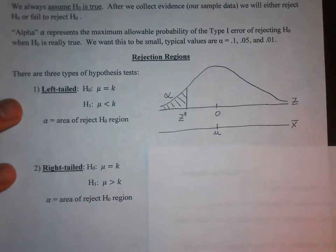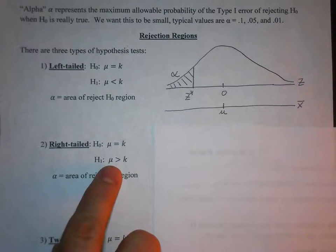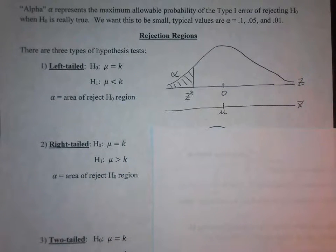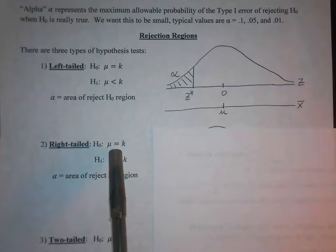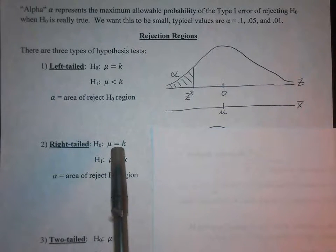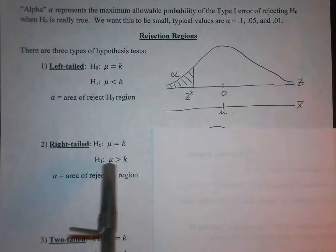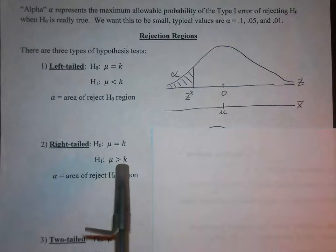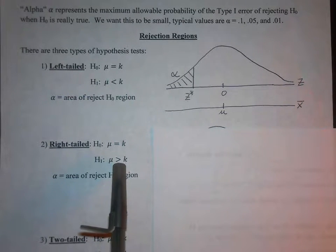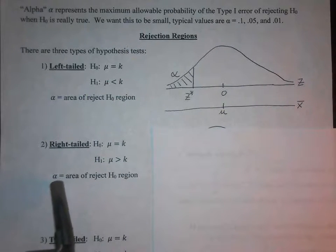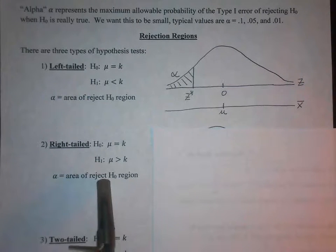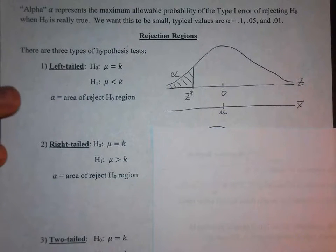With a right-tailed test, the alternative hypothesis is mu is greater than k. The null hypothesis always contains an equals — the only thing that changes in your hypotheses are the inequalities. The inequality in the alternative hypothesis tells you which way you're shading. A greater than means we're shading to the right. What we're shading is alpha — the area of the rejection region — which is a small value like 0.01, 0.05, or 0.1.